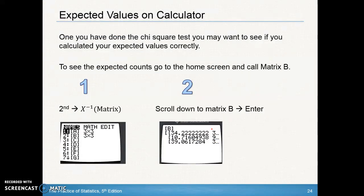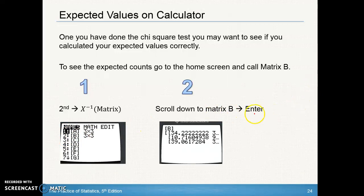How can you get those expected values on your graphing calculator? Once you've run the chi-square test, go to your home screen and call up matrix B. Hit 2nd, x to the negative 1 — which is your matrix — and this time you're not editing. Notice matrix 2, which is matrix B, is now populated with a 3×3 matrix of your expected values. Scroll down to B or number 2, hit Enter. After you hit Enter, matrix B comes up with all your expected values. Scroll over with the arrow to get the rest. When you round, make sure your rows and columns add up to the correct totals.